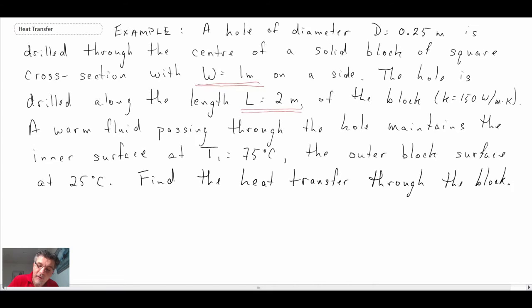We're told that a warm fluid passing through the hole maintains the inner surface at T1 equals 75 degrees C. This is a very simplified approximation for convective heat transfer. We'll assume the inner wall temperature is at 75 degrees C, the outer block temperature is at 25 degrees C, and then we want to find the heat transfer.